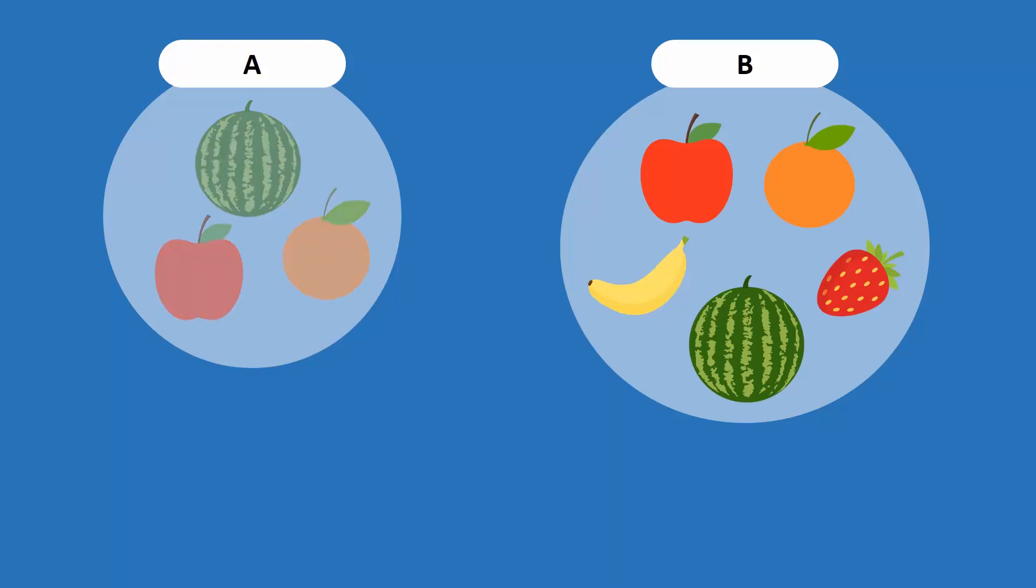Set A has three elements, while set B has five elements. We can also see that all of the fruits of set A, which are watermelon, apple, and orange, are also present in set B. We can say that set A is part of set B.